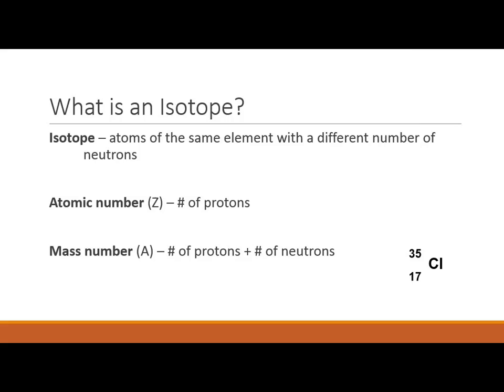Just like atoms of different elements are very different — they behave differently when they react chemically. So an oxygen atom and a calcium atom behave very differently. Now, let's say you get a bag of M&Ms. As you pop them into your mouth, they all taste delicious and chocolatey. But when you open your eyes, you see the M&Ms are different colors. They taste the same and yet they are slightly different — that's a lot like an isotope.